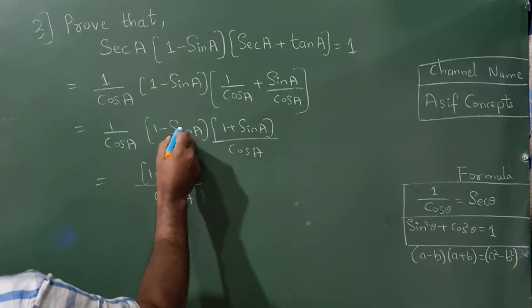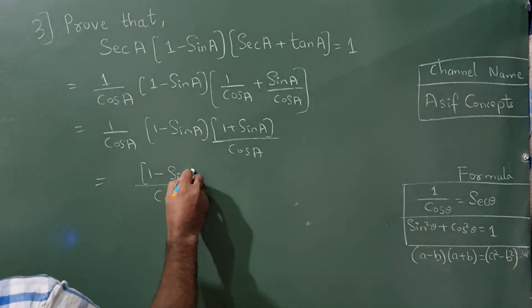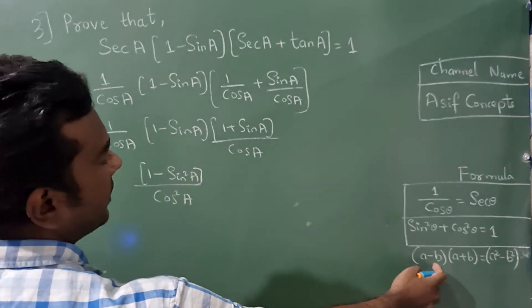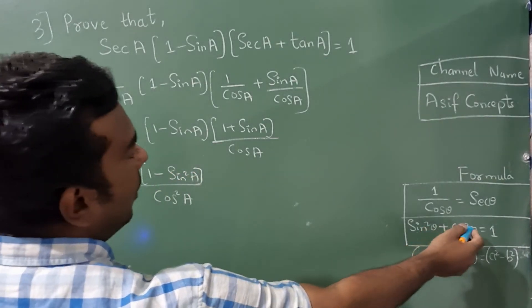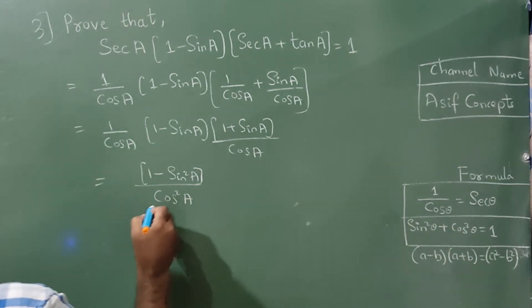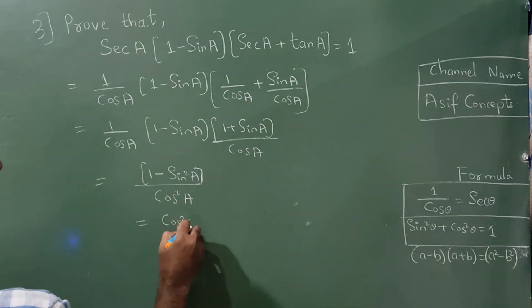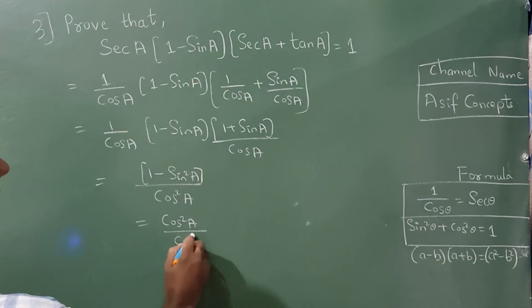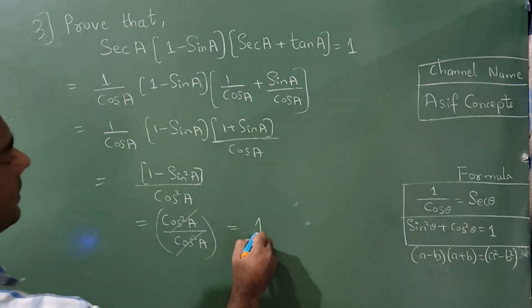1² is 1, minus sin² A, according to this formula. Again, from this formula, 1 minus sin² will become cos² A. And in the denominator there is cos² A, so both get cancelled. Final answer is 1.